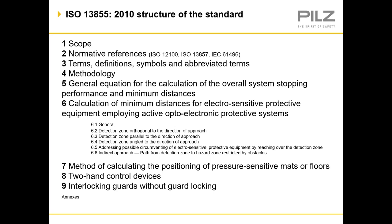Section four is methodology — in this case how we approach the calculation. Section five is the equation: S = K × T + C. Then we get into more specifics: section six covers light curtains, laser scanners, their mounting planes, positions, and guidance on circumventing. Section seven covers pressure sensitive mats, section eight two-hand control devices, and section nine guard locking and interlocking — including how to decide between interlocking or fail-safe locking.